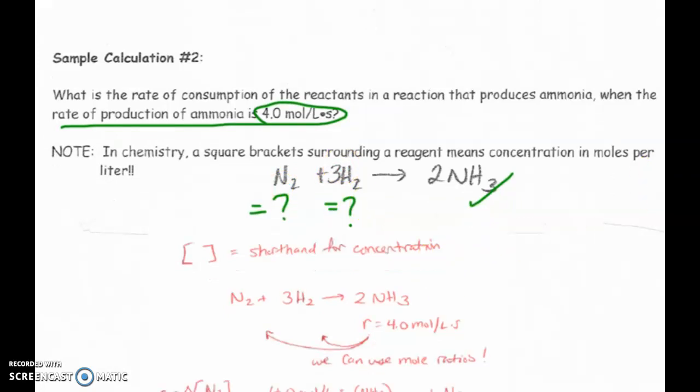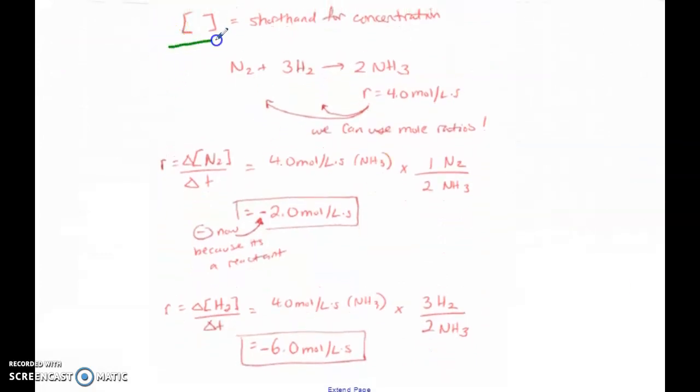So let's take a look at this here. So remember, the square brackets is a shorthand symbol for concentration. I use this quite a bit. So here's our reaction. We know the rate of ammonia. So we can use mole ratios to figure out these other two. So let's say we wanted to do the rate of nitrogen. So the rate of nitrogen, you would take the rate of ammonia and multiply by the ratio of nitrogen compared to ammonia. So what ends up happening is the ammonia cancels, and we're left with units of nitrogen.